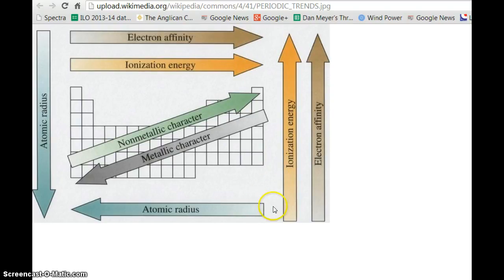As you go from right to left, or backwards of the way that we read, atoms get bigger. Ionization energy and electron affinity both get biggest at the element fluorine, which is on this part of the periodic table.